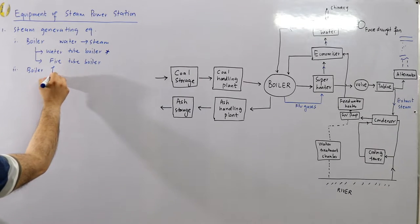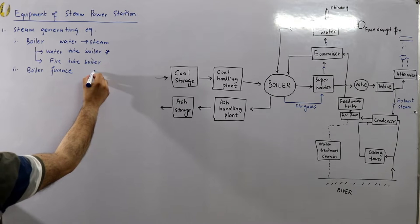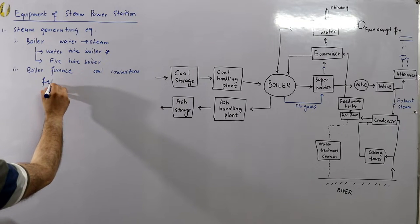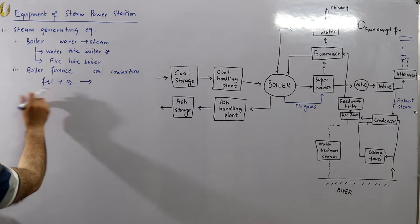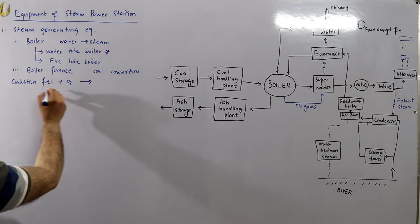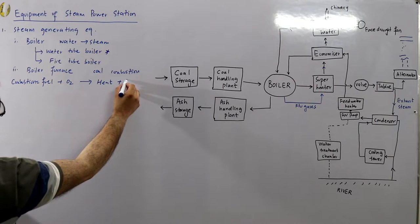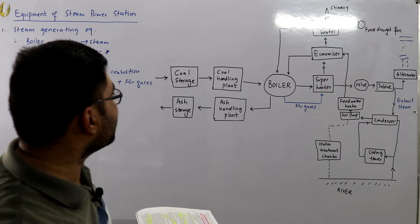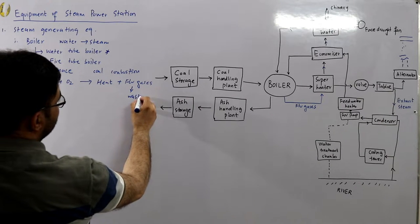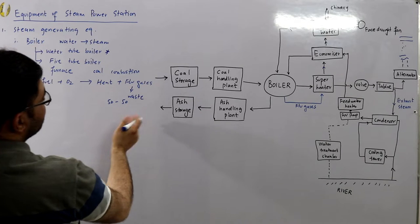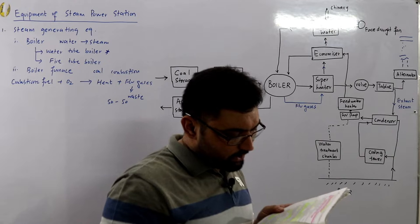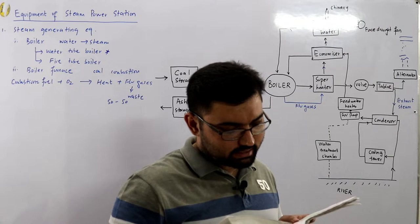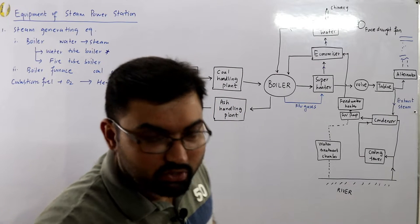Next is the boiler furnace. The furnace is the area where coal combustion takes place. Fuel is provided inside along with oxygen, and this combustion process releases heat energy. The byproduct is flue gases — oxides of sulfur, hydrogen, nitrogen, etc. — which are essentially waste. It is roughly a 50/50 conversion: 50% heat, 50% flue gases. The furnace is made of refractory materials such as fire clay and silicon.